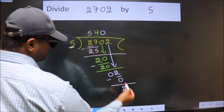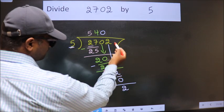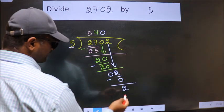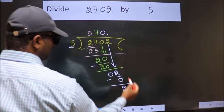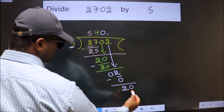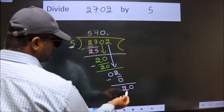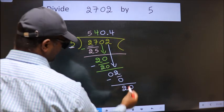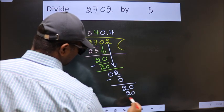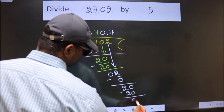Over here, we did not bring any number down, and 2 is smaller than 5. So now we can put dot and take 0. So 20. When do we get 20 in 5 table? 5 fours, 20. Now we subtract. We get 0.